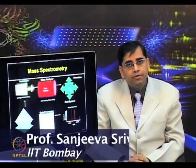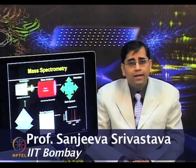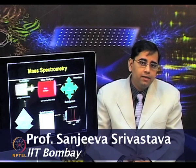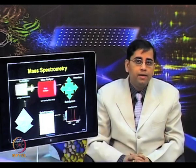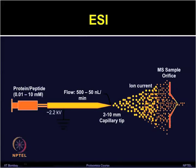Mass spectrometry has become the method of choice for analysis of complex protein samples in proteomic study due to its ability to identify thousands of proteins. The ionization source is responsible for converting analyte molecules into gas phase ions in vacuum. This has been made possible by the development of soft ionization techniques which ensures that the non-volatile protein sample is ionized without completely fragmenting it.